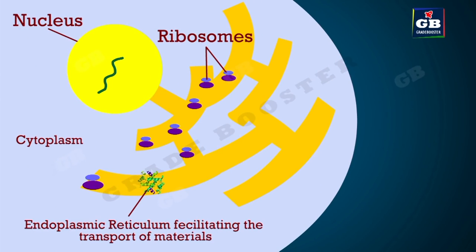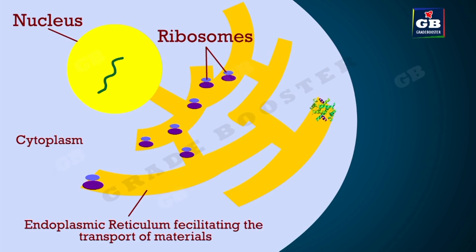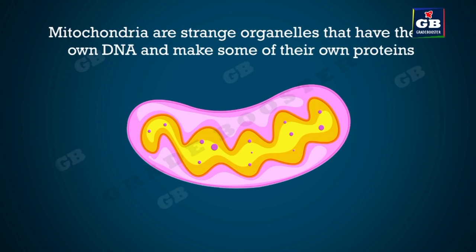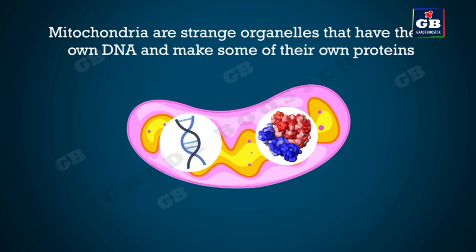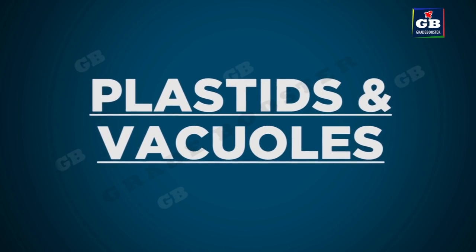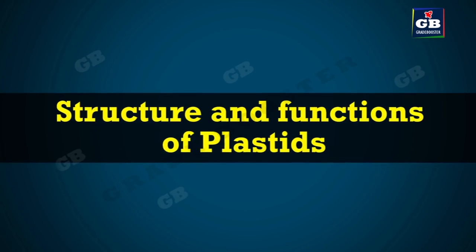Generally, the nucleus has DNA and passes information to cell organelles like the endoplasmic reticulum to make proteins necessary for cellular activities. However, mitochondria are different — they have their own DNA and ribosomes, so they can manufacture some of their own proteins. That is why mitochondria are sometimes called strange organelles.